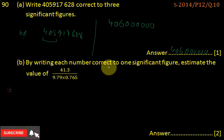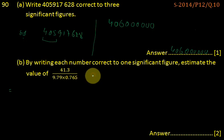And part b. In part b, by writing each number correct to 1 significant figure, estimate the value of 41.3 divided by 9.79 multiplied by 0.765.